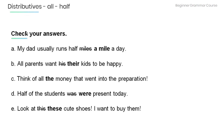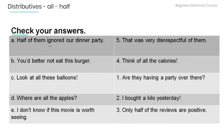Now let's check your answers. A: 'My dad usually runs half a mile a day.' B: 'All parents want their kids to be happy.' C: 'Think of all the money that went into the preparation.' D: 'Half of the students were present today.' E: 'Look at these cute shoes — I want to buy them.' Matches: A–5 (that was very disrespectful of them), B–4 (think of all the calories), C–1 (are they having a party over there?), D–2 (I bought a kilo yesterday), E–3 (only half of the reviews are positive).